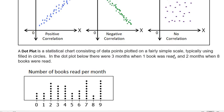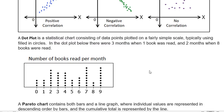A dot plot is a statistical chart consisting of data points plotted on a fairly simple scale, typically using filled in circles or little dots. In the dot plot below, there were three months when one book was read. So it's looking at number of books read per month.